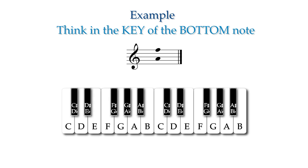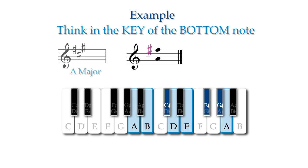Using the second method, I will think in the key of the bottom note A major, which I know has an F sharp scale degree 6, a C sharp scale degree 3, and a G sharp, the leading tone.